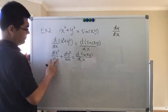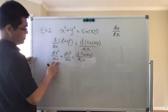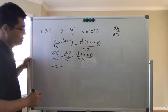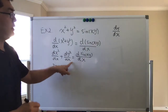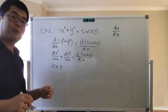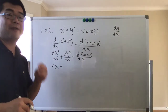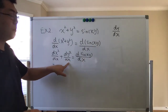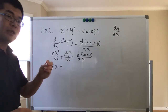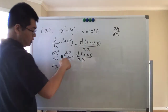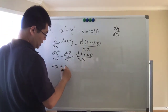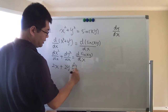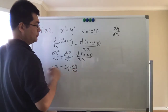The derivative of x squared with respect to x is very easy to calculate — it's 2x. For d/dx of y squared, since y is a function of x, we use the chain rule, which gives us 2y times dy/dx.